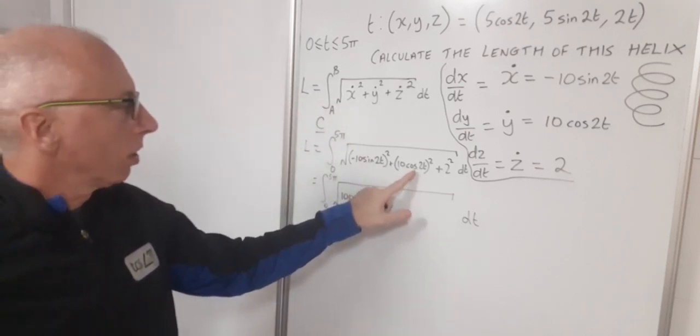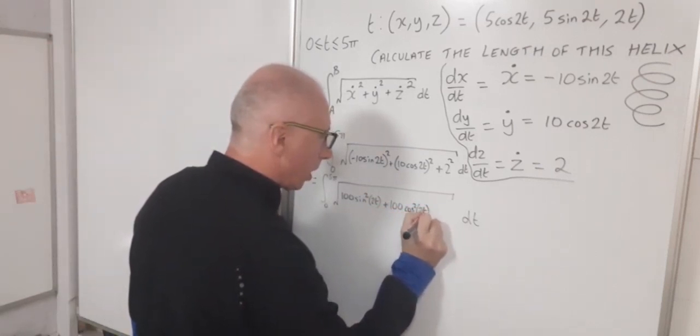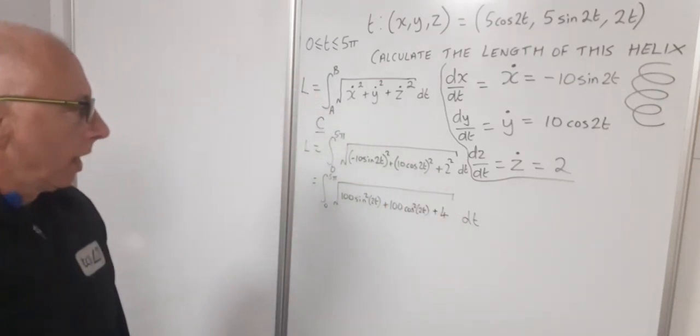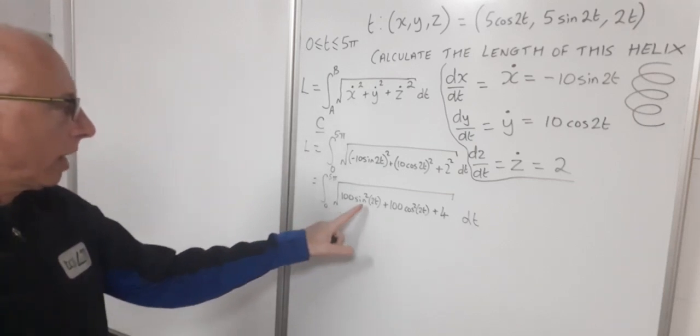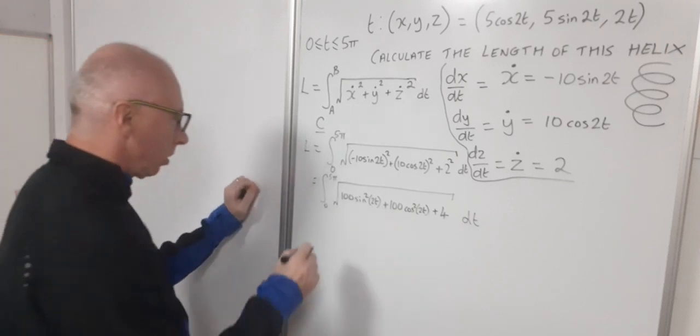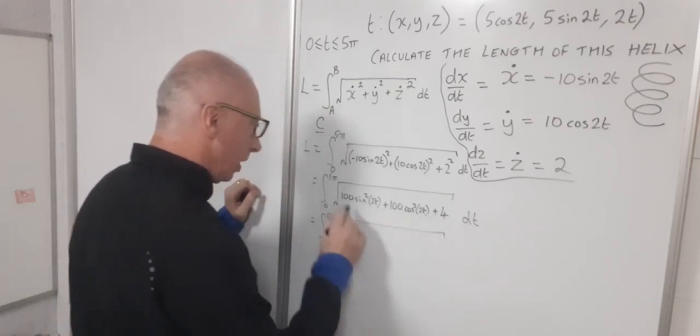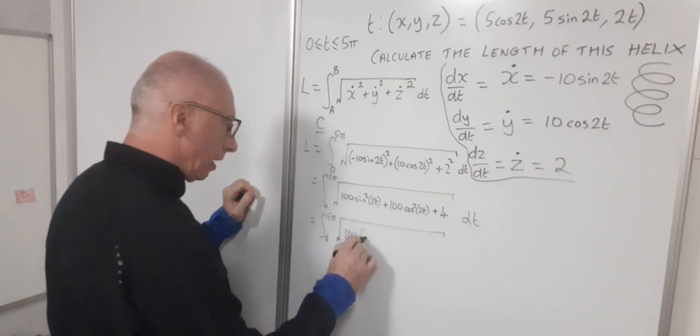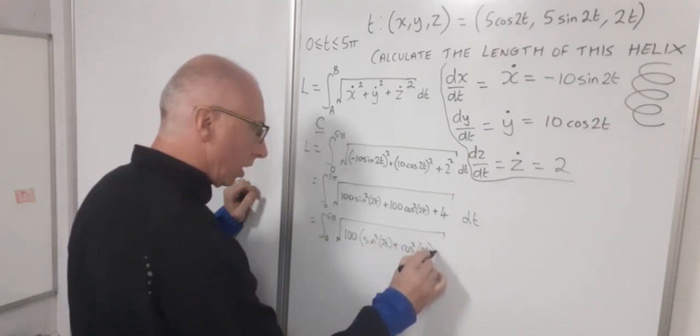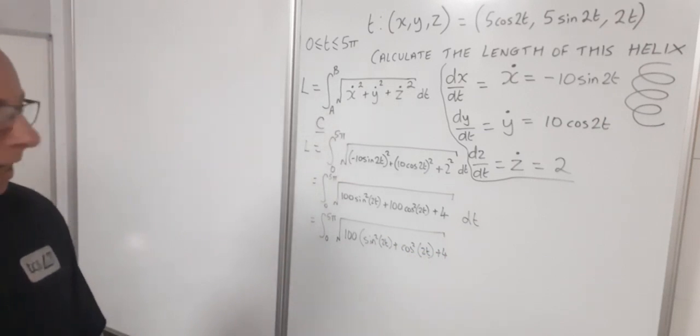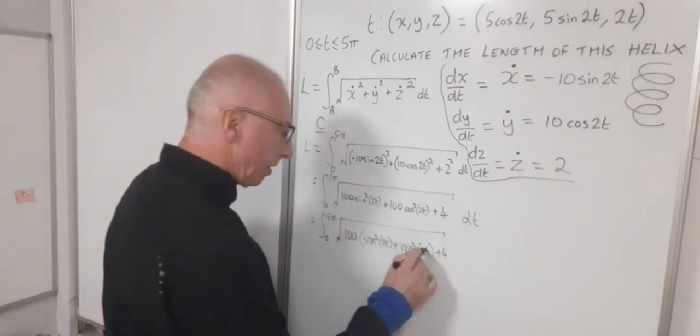Next one here, square this. We've got 100 cosine squared 2t, and plus two squared is four. Okay. Now we can use the famous trig identity here. Cosine squared plus sine squared equals one. So if we get a sine squared and a cosine squared out of this, then we could be looking good. So now we've got from zero to five pi, square root. Let's take the 100 out. And then we've got sin²(2t) + cos²(2t) + 4. Well that's no problem for us at all. Sine squared 2t plus cosine squared 2t, that just cancels out and that just becomes one.